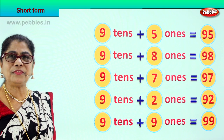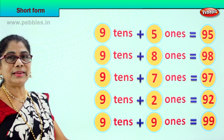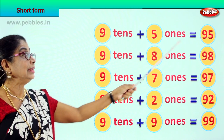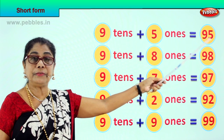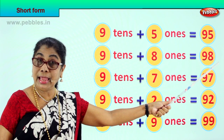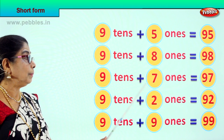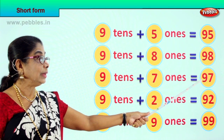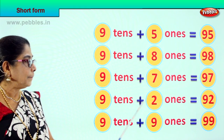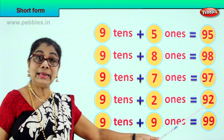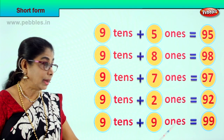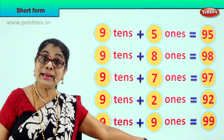Good. 9 tens plus 2 ones. What is 9 tens plus 9 ones? 9 tens plus 9 ones equal to? 9 plus 9 tens is 90 plus 9 ones. That is 90 plus 9 is equal to 99. 9 and 9, 99. Did you enjoy doing the short form? Come on, let's read together. 9 tens plus 5 ones is equal to 95. 9 tens plus 8 ones is equal to 98. 9 tens plus 7 ones equal to 97. 9 tens plus 2 ones is equal to 92. 9 tens plus 9 ones is equal to 99.